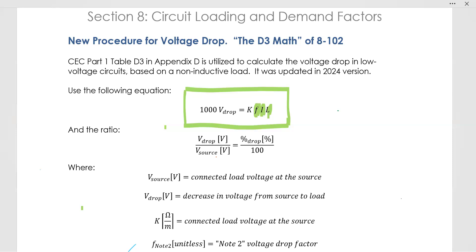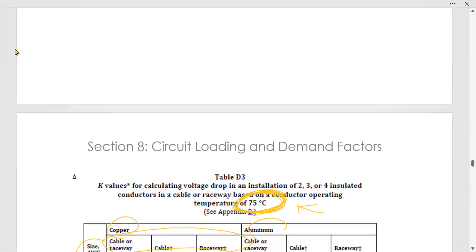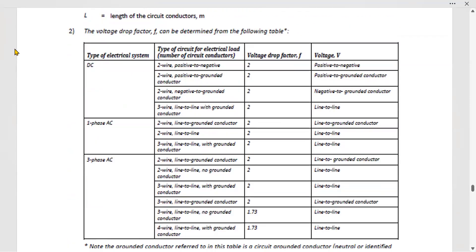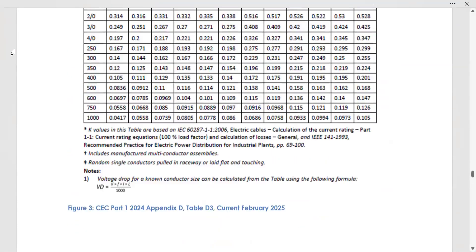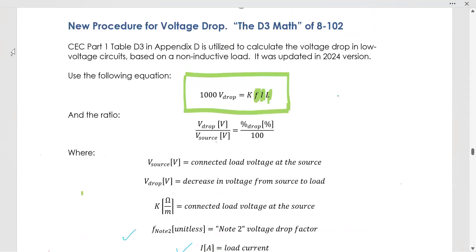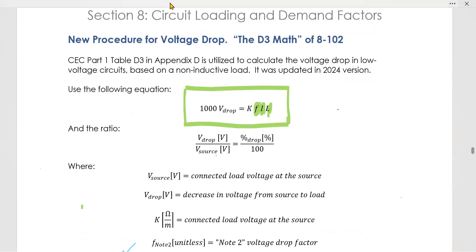We typically know the length in meters. We typically know our load current in amps. F is a factor that comes from a table, and that table looks like this.